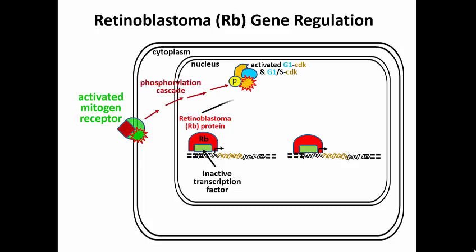These in turn phosphorylate the RB subunit of a transcription factor that represses several genes. RB is the retinoblastoma protein, found in all cells, but originally associated with a mutation causing eye tumors — hence the name retinoblastoma.